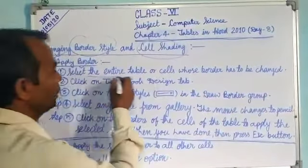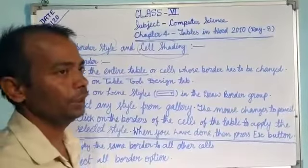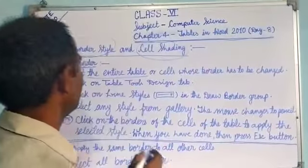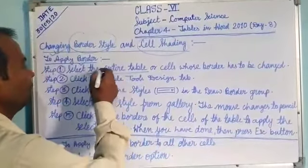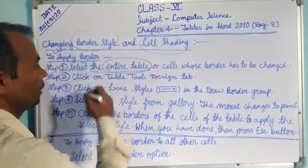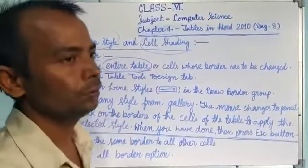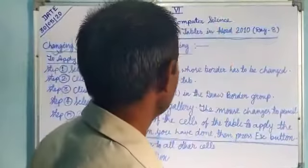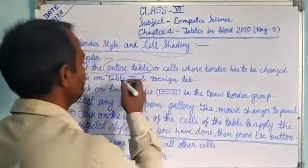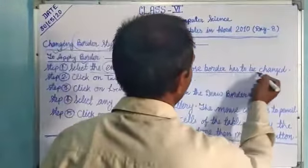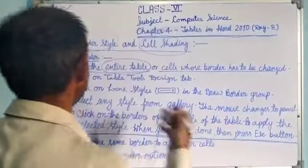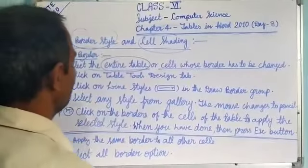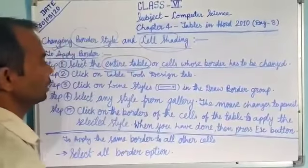First, select the entire table if we need to do border settings for the entire table. Otherwise, select specific cells — one cell, two cells, or more than two cells — wherever we want to change the borders. So first, do the selection of those cells.